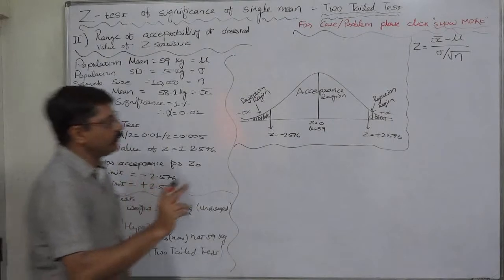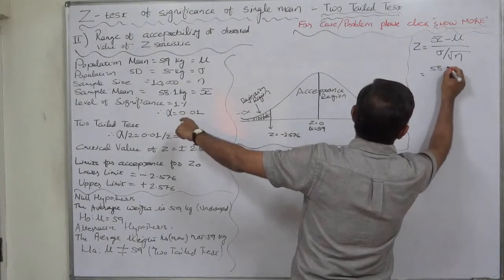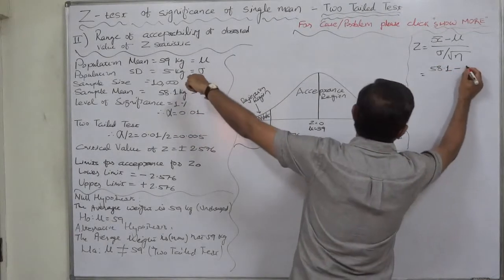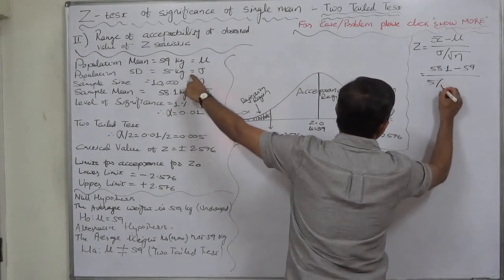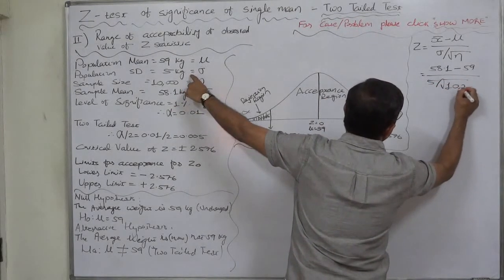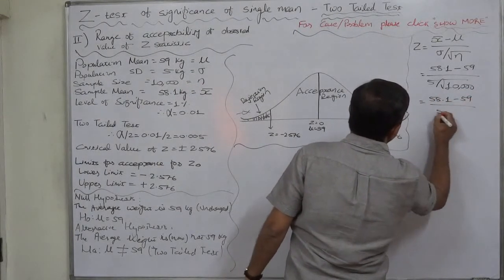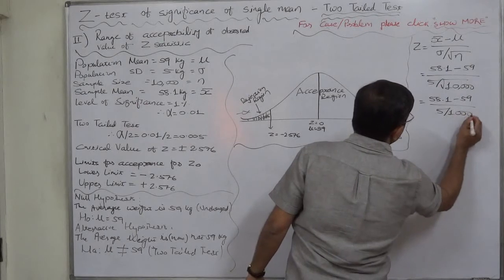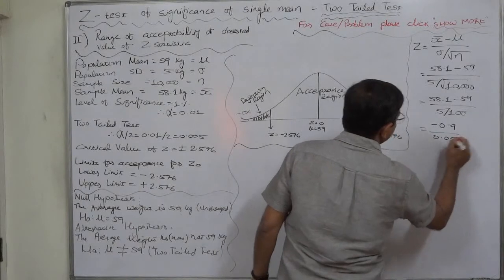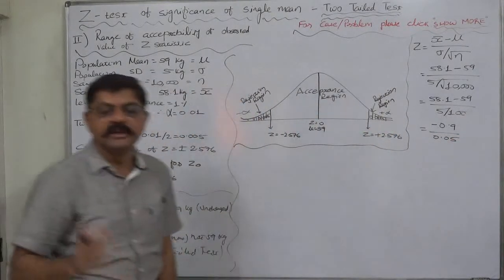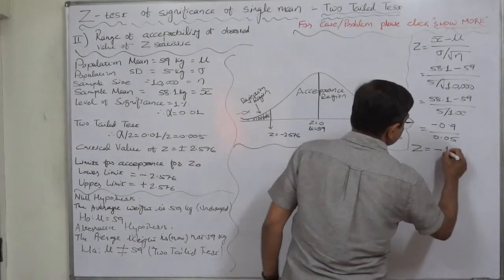So first of all, let's calculate the value of z. Z is sample mean 58.1 minus population mean 59 divided by standard deviation 5 divided by square root sample size. So it is 58.1 minus 59 divided by 100. So it is minus 0.9 divided by 0.05. 0.05 means something like multiplying by 20. So z comes to minus 18.